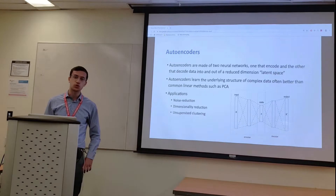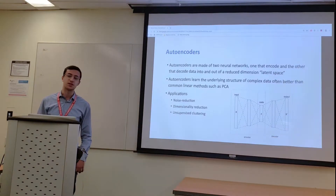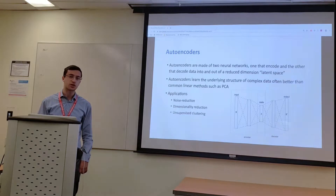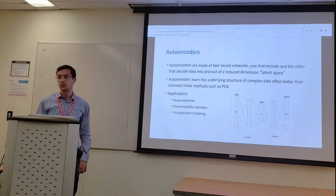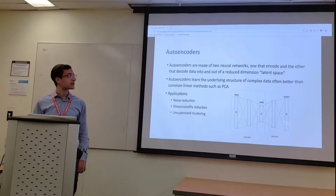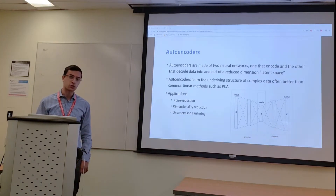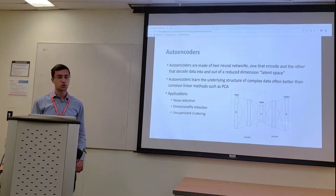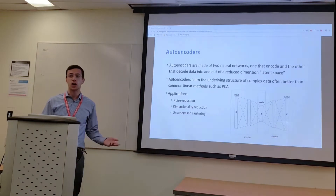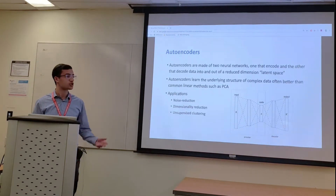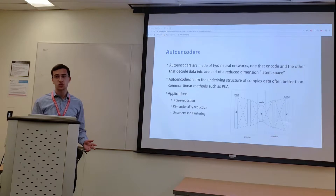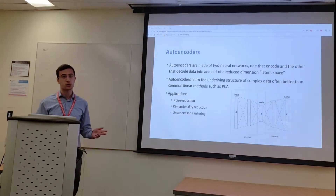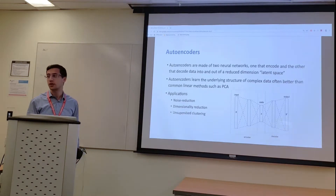To combat these issues, AE-Impute uses an autoencoder. An autoencoder is a machine learning technique which encodes and decodes data into and out of a reduced-dimension latent space, and by doing this non-linearly, it can learn the underlying structure of complex data better than linear methods such as PCA. Different applications which autoencoders are used in nowadays are noise reduction, dimensionality reduction, and unsupervised clustering.